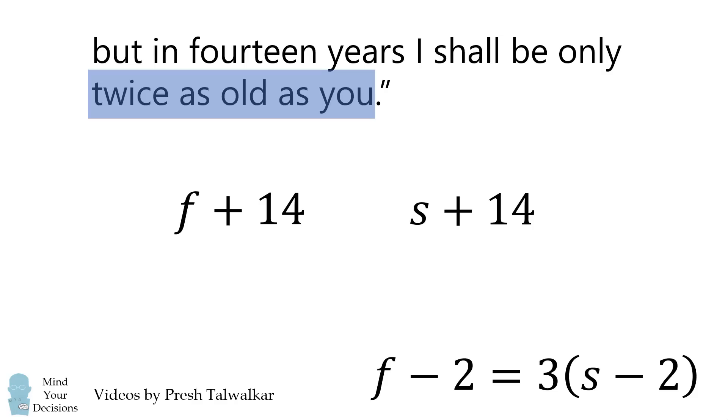At that time, the father's age will be twice that of the son. Thus, F+14 is equal to twice the quantity S+14.